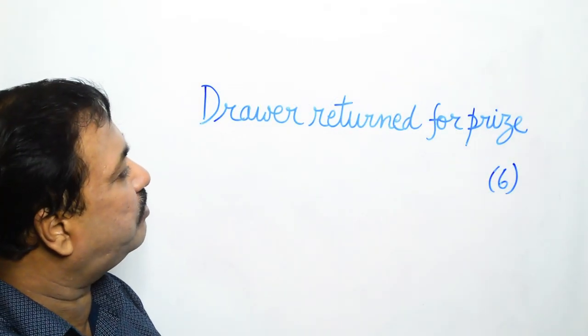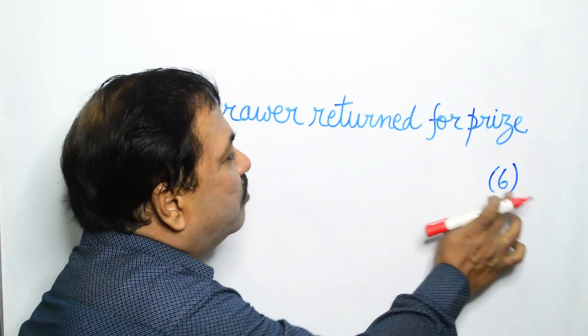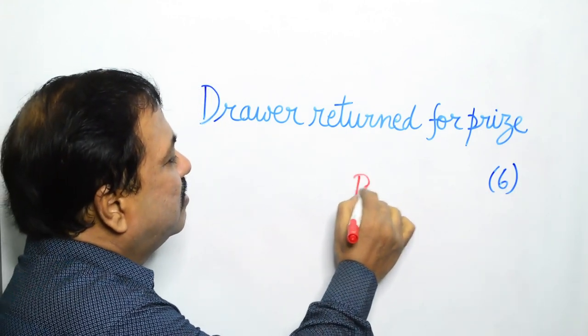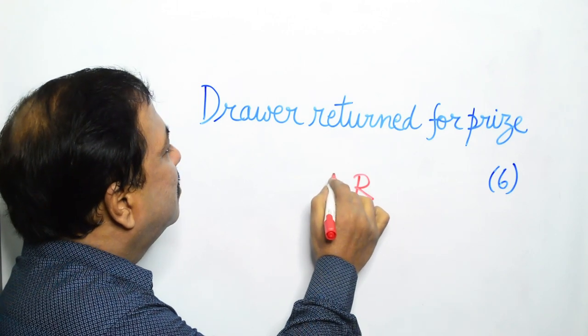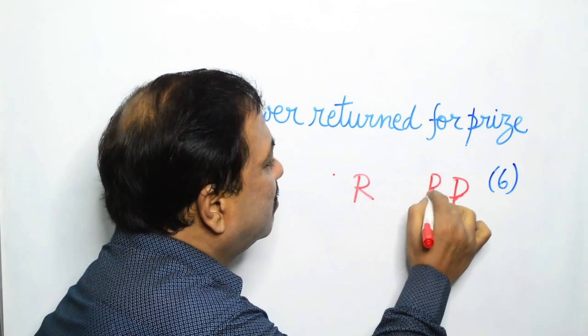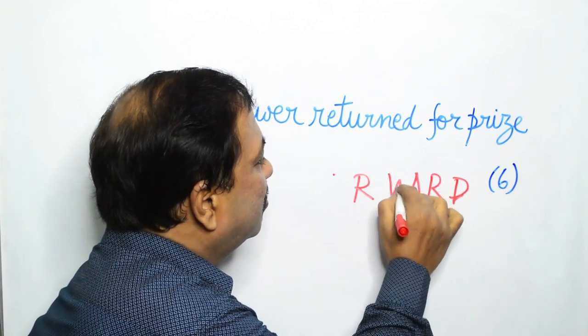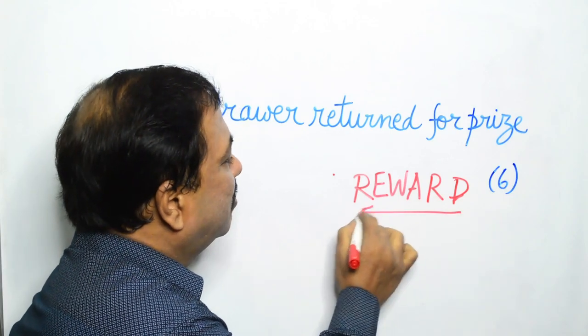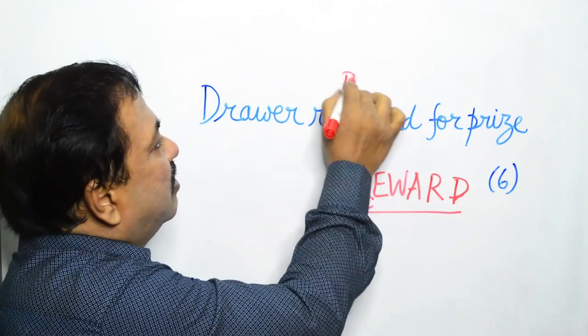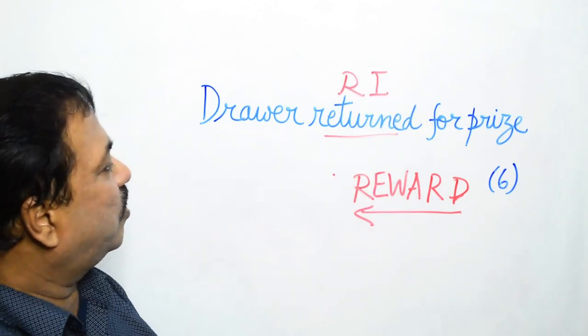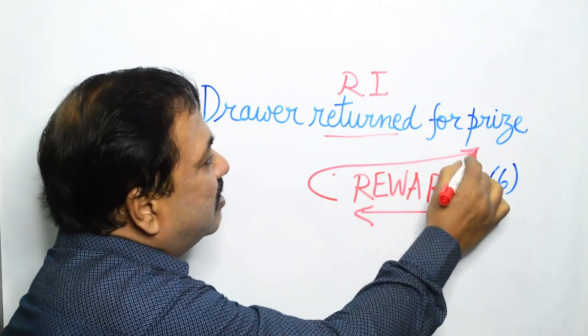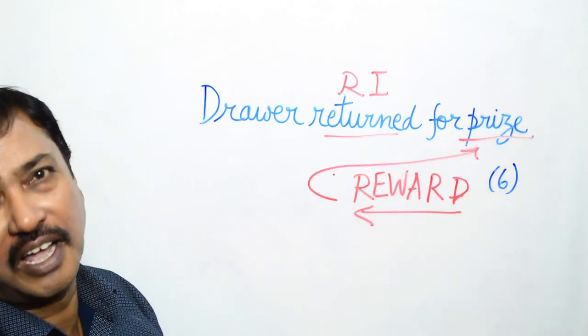Draw returned for prize, asking for a six letter word. Just we have to return draw. This is the reversal indicator, and in the process we get the word reward, which is prize, and our answer.